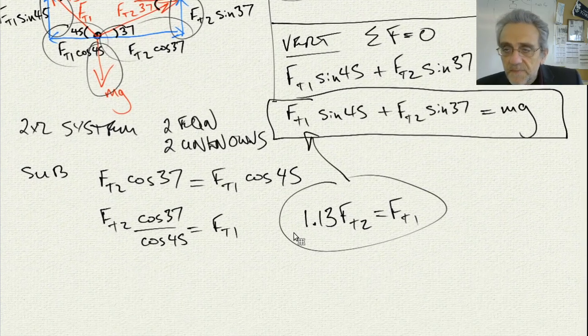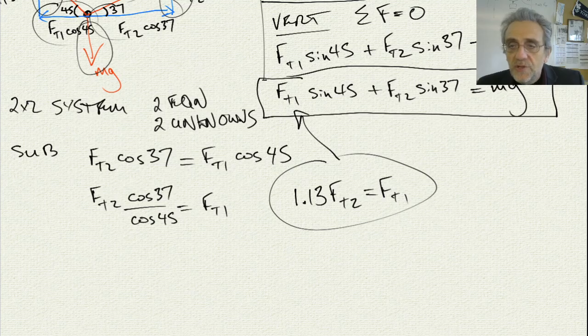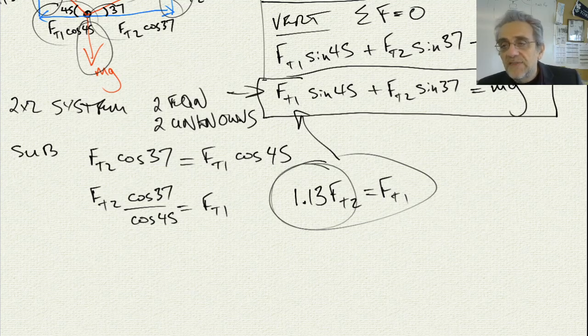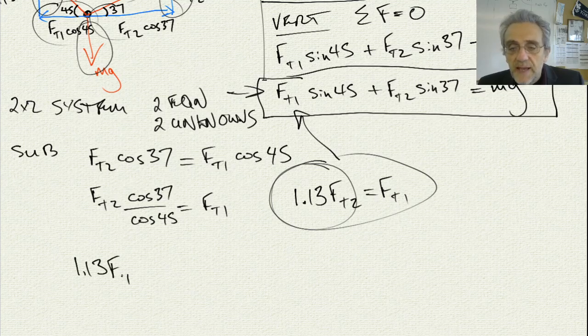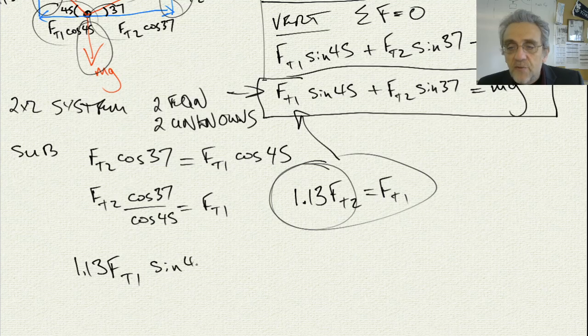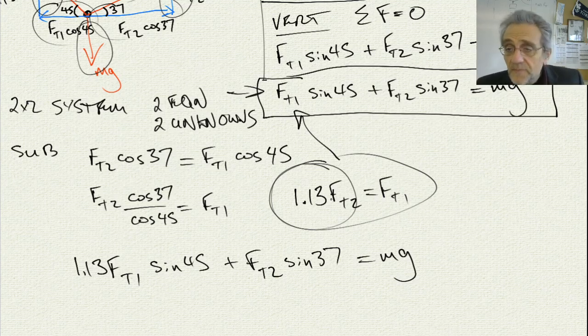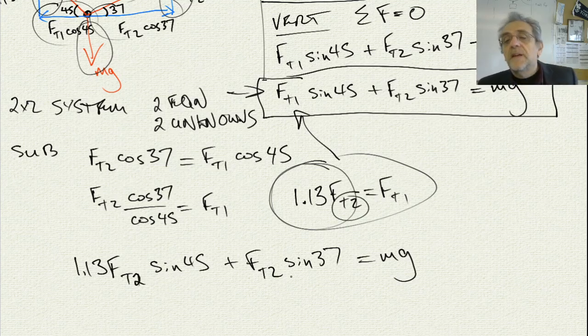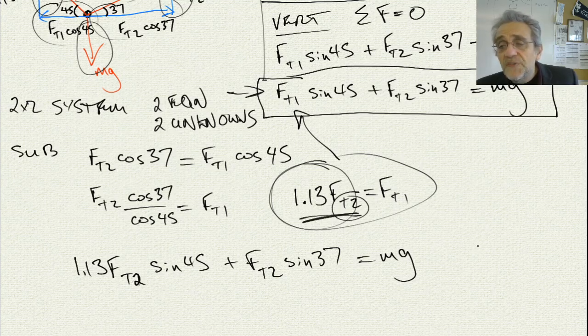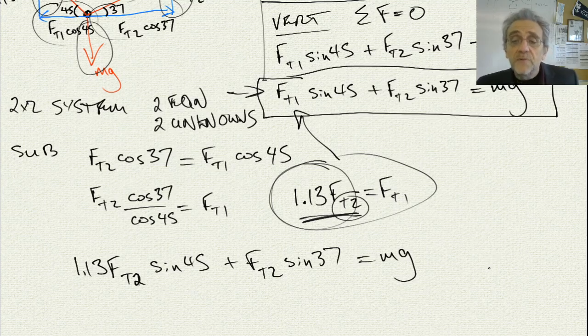Now, I'll take this and I'll substitute it into here in the second equation. So, let me make some room and I'll go, so I'm just going to rewrite this equation again, this boxed equation, the second one. But now, I'll substitute this in wherever I see FT1. So, it's going to start out with 1.13 FT1 times sine 45 plus FT2 sine 37 equals MG. Now, oops, actually I made a mistake. This should have been FT2, not FT1. Okay, my bad. So, notice here, this is 1.13 FT2. There it is, 1.13 FT2 sine 45. Now, if you'll notice, I have one equation and one unknown value. Now, all I've got to do is calculate these values of sine 45 and sine 37, add them up, and then I can get my answer.